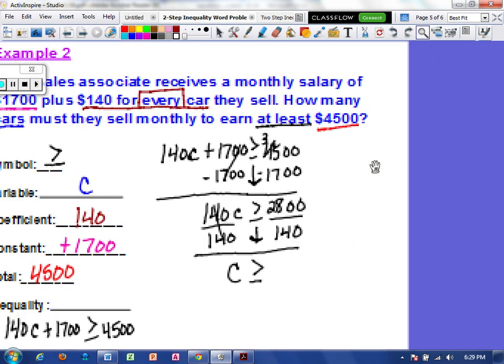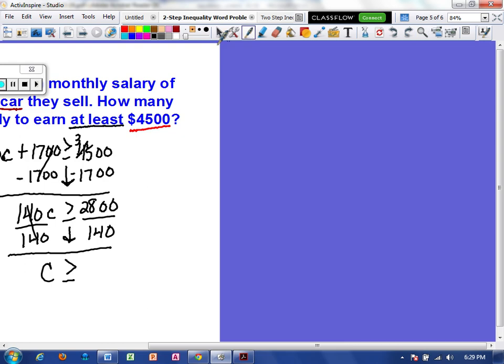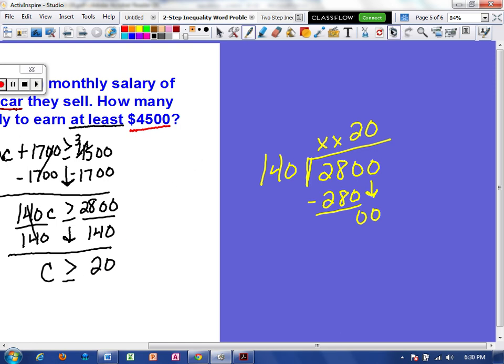And again, I'm going to come out to the side here and actually work out that division. Alright. 140 cannot go into 2. It cannot go into 28. But it could go into 280 two times. Get a remainder of zero. Bring down the next zero and it would go in there zero times. So that means C has to be greater than or equal to 20.